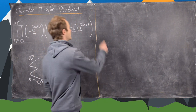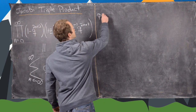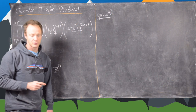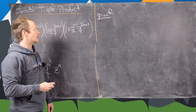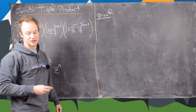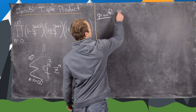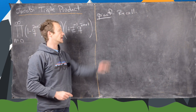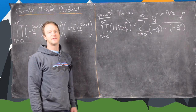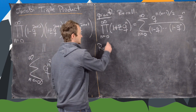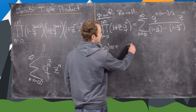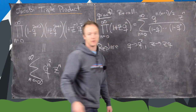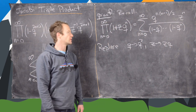The first step of the proof is to take an identity that we proved in the previous video and do some substitutions. We're going to replace q with q squared and replace z with zq, and let's see what we get when we do that replacement.